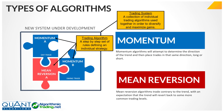A mean reversion algorithm is more of a contrarian algo — it trades contrary to the trend with an expectation that the trend will revert back to some more common trading level, reverting back to the mean. There are also other algos: breakout algos, day trade algos, swing trade algos. These are broad categories I'm using for a specific purpose that will become clear in other videos when I talk about assembling a trading system.